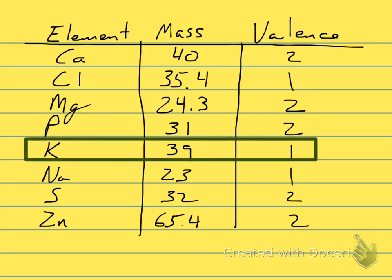Let's look at potassium. It's right here. So our mass is 39, and our valence is 1.